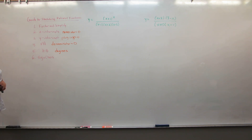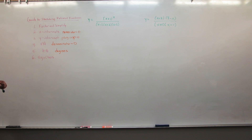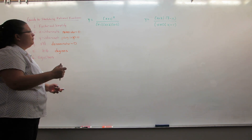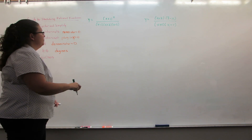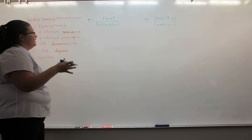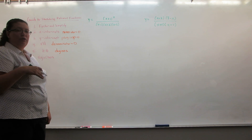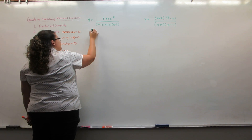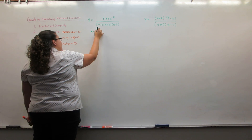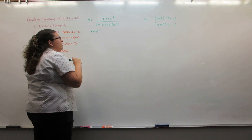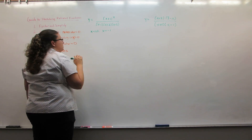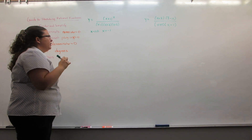And last is going to be by using a sign chart. So we go over to this first problem. It's already factored and there's nothing to simplify. X-intercepts are everywhere the numerator equals 0, which in this case is just x equals negative 1.